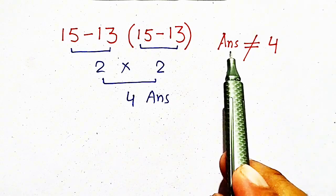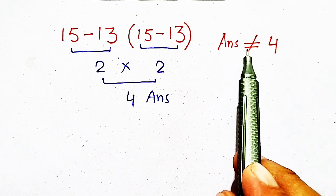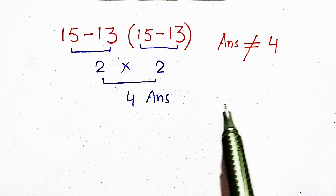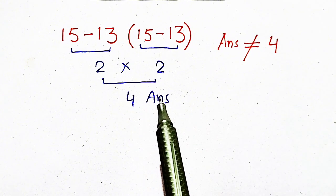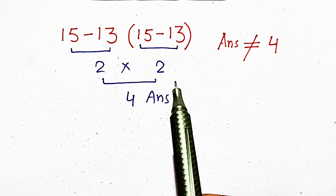But remember that I have mentioned that answer should not be equal to 4. But here is 4. It means we have made some mistakes.